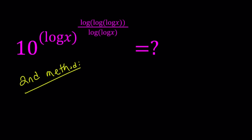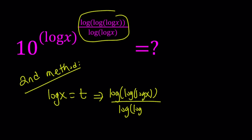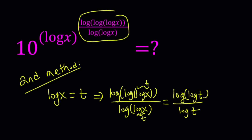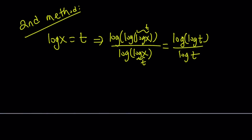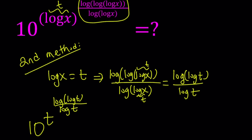For my second method, I'm going to go ahead and set log x equal to t. Let's focus on the exponent: log log log x divided by log log x. Since log x equals t, this can be written as log log t divided by log t. So our expression turns into 10 to the power t to the power log log t divided by log t. It looks a little better than the original — fewer logs.